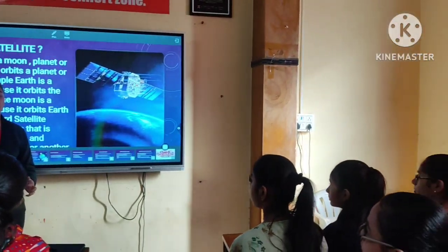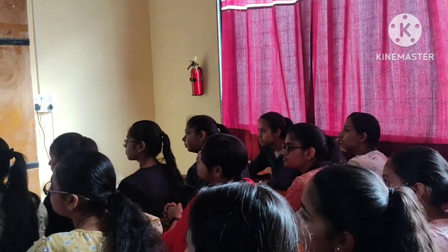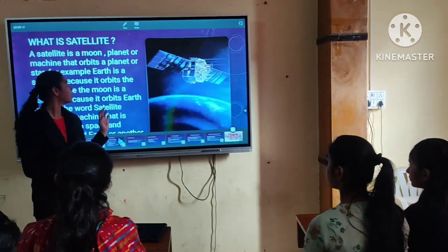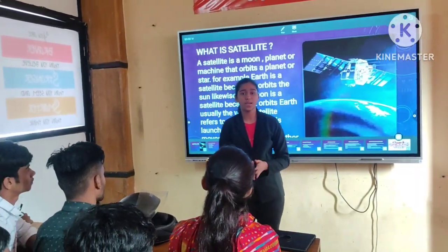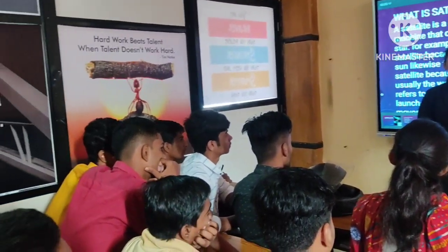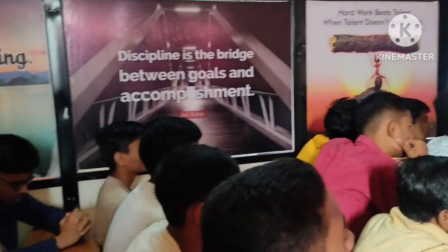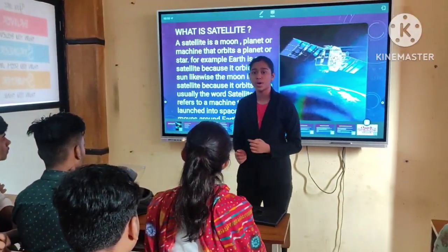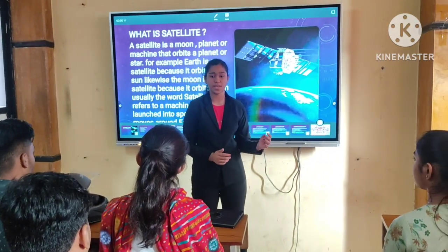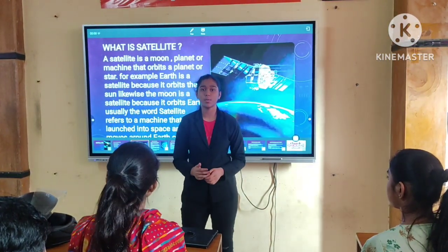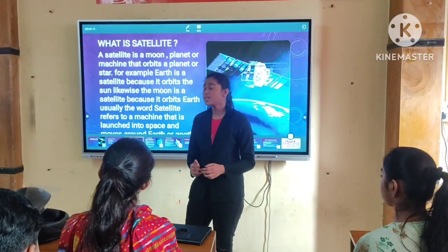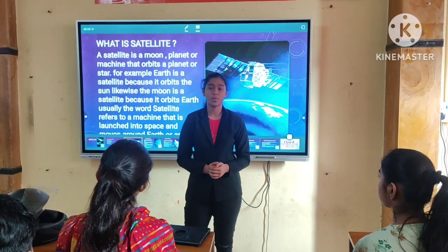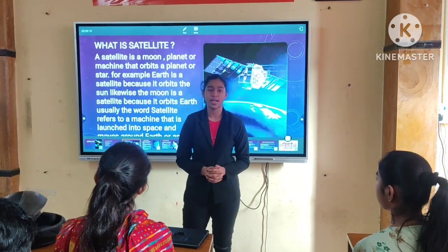A satellite is a moon, planet, or machine that orbits another planet, machine, or moon. Likewise, Earth is a satellite because it orbits the Sun, and the Moon is a satellite because it orbits the Earth. Usually the term satellite refers to a machine that is launched into space and revolves around Earth or another body in space.